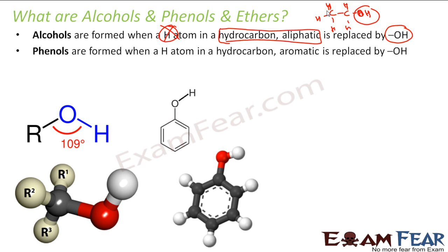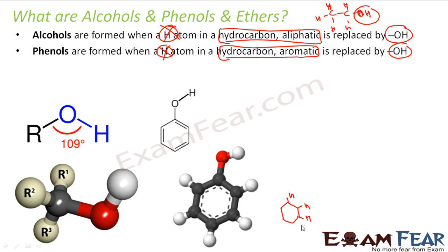Instead of an aliphatic hydrocarbon, if you take an aromatic hydrocarbon and do the same thing — replace a hydrogen with OH — what you get is phenol. For example, you have benzene with 6 hydrogens. If you replace any one H with OH, you get phenol. So: take benzene, replace H with OH, you get phenol.